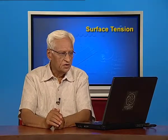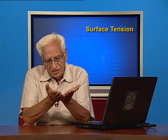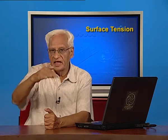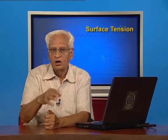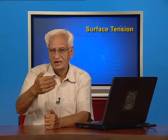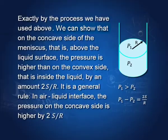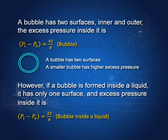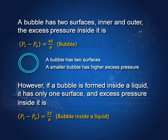By a similar argument, we can show that the pressure on the concave side of a liquid surface is higher than the pressure on the convex side by 2S/r. To summarize: the excess pressure inside a drop is 2S/r, where r is the radius of the drop. A bubble inside a liquid has only one surface, so the excess pressure inside it is also 2S/r. A soap bubble in air has two surfaces, so the excess pressure inside it is 4S/r.